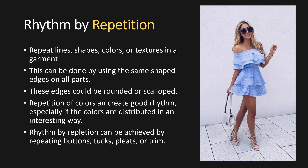First we have rhythm by repetition. This is when lines, shapes, colors, or textures in a garment are repeated. It doesn't necessarily have to be a pattern — it can be actual certain details. If you look at the design on the right side, the girl's design uses repetition with the ruffles. This can be done using the same shaped edges in all parts — these edges could be rounded or scalloped. Repetition of colors can create good rhythm, especially if the colors are distributed in an interesting way. Rhythm by repetition can also be achieved by repeating buttons, tucks, pleats, or trim. Any button-up shirt shows repetition because of the multiple buttons.